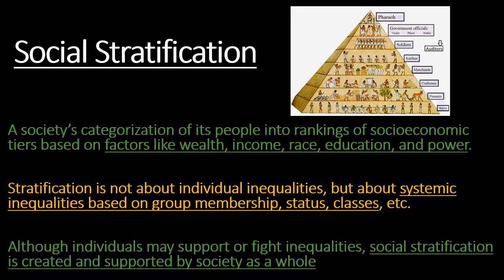Thinking back to the sociological imagination, where we talked about troubles and issues — if unemployment is very low and someone is unemployed, that probably says more about the individual. But if unemployment is at 20% and someone is unemployed, it says something more systemic about what's happening in society — the divisions and disadvantages affecting entire groups of people, not just outliers.